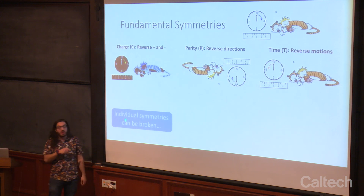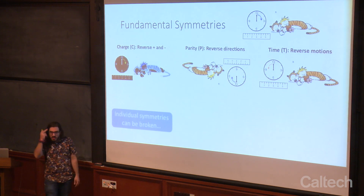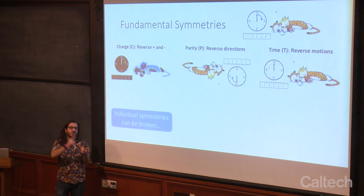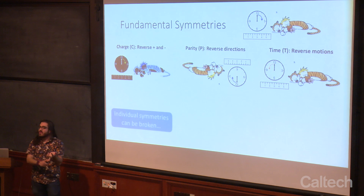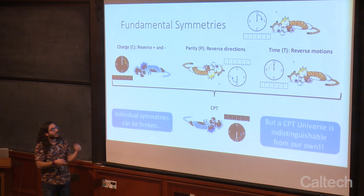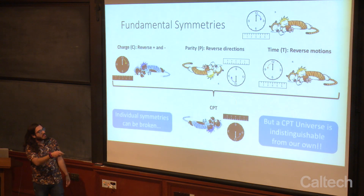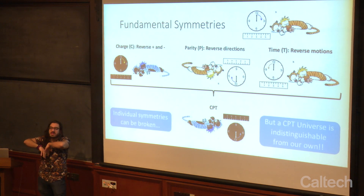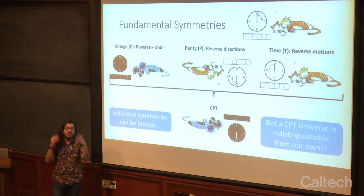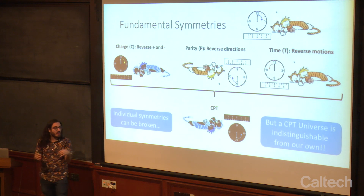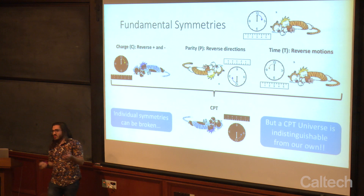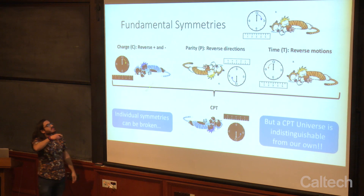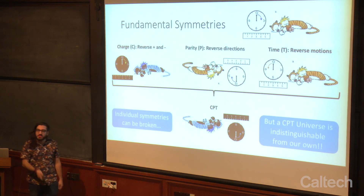So individual symmetries can be broken. But you can imagine another symmetry: what if you do all three? What if you flip up and down, turn all the pluses to minuses, and reverse time? Can you tell the difference in that universe? We call that CPT. It turns out this CPT universe — where you've switched all these things — is totally indistinguishable from our own. We think it should be indistinguishable; if it's distinguishable, we have a lot of issues in our theories. I really want to focus on this symmetry of charge: what happens when you reverse plus and minus?